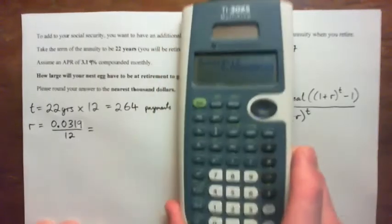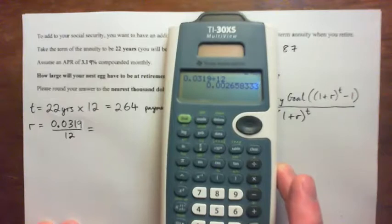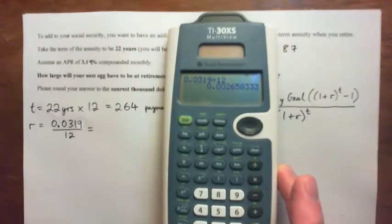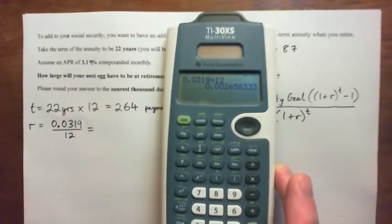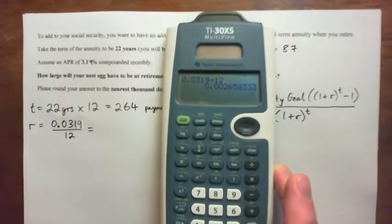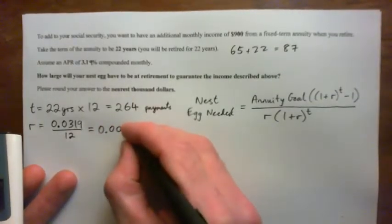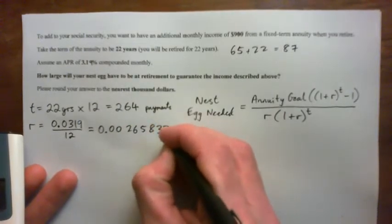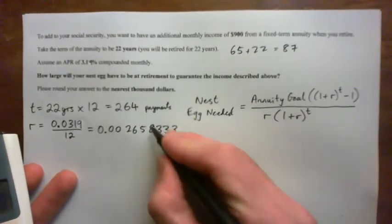Now, that's a never ending decimal. I'm going to probably just use 0.0319 over 12 and just use that directly in the formula. But let me write this down anyway. 0.002658333 and going on forever. This goes 3-3-3 on forever.